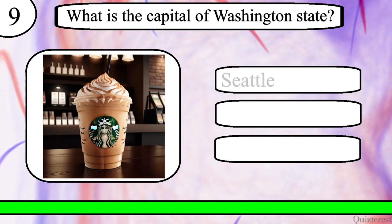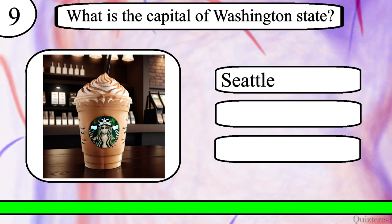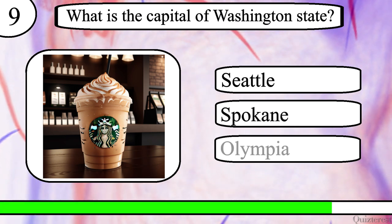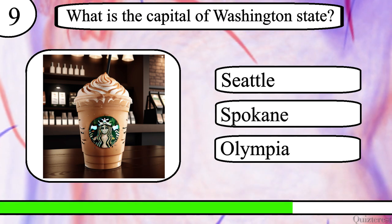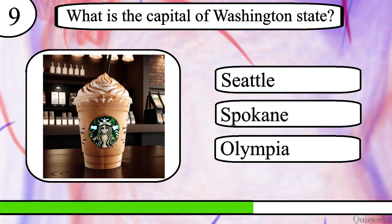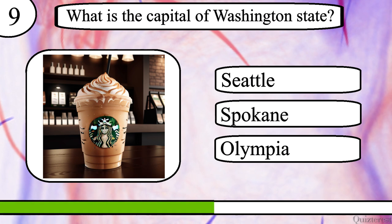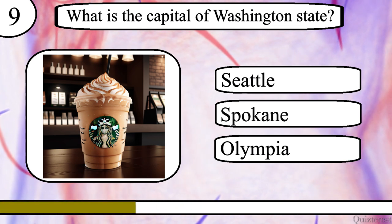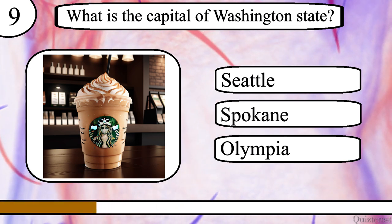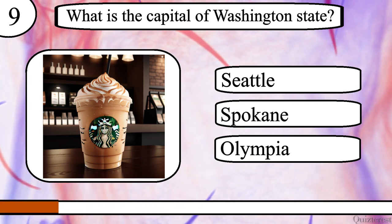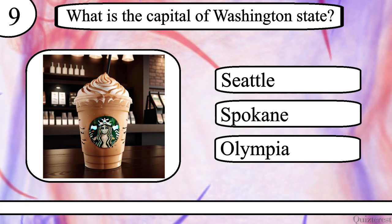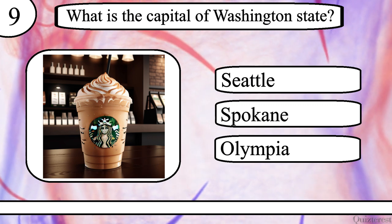Question 9. What is the capital of Washington state? Seattle, Spokane, or Olympia? The correct answer is Olympia.